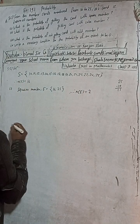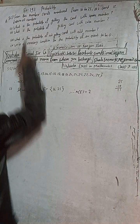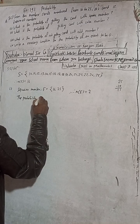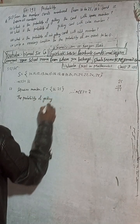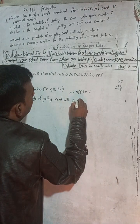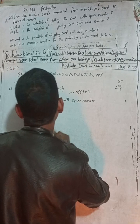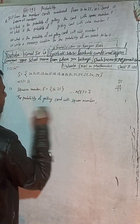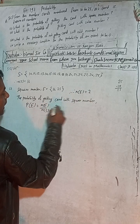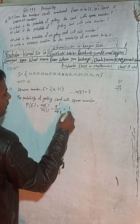The probability of getting a card with a square number — P(E) is equal to n(E) divided by n(S). n(E) is 2 and n(S) is 16. That means P(E) = 2/16 = 1/8. So 1/8 is the answer.